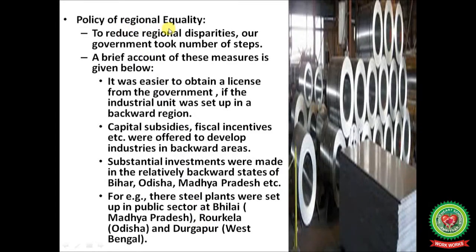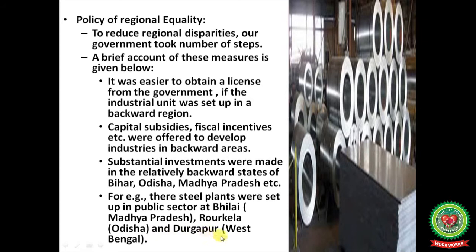Policy of regional equality: to reduce regional disparities, the government took several steps. It was easier to obtain a licence if the industrial unit was set up in a backward region. Capital subsidies and fiscal incentives were offered to develop industries in backward areas. Substantial investments were made in relatively backward states like Bihar, Odisha, and Madhya Pradesh. For example, steel plants were set up in the public sector at Bihar, Madhya Pradesh, Rourkela (Odisha), and Durgapur (West Bengal).